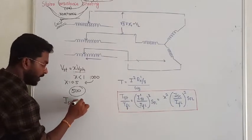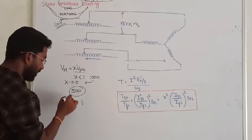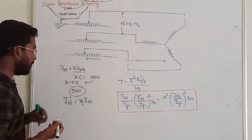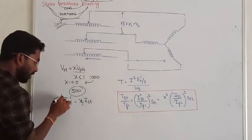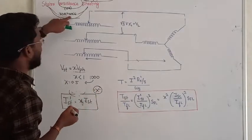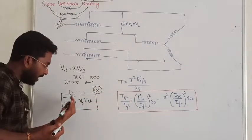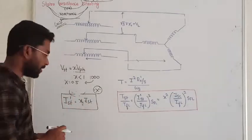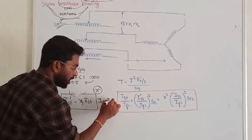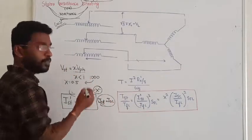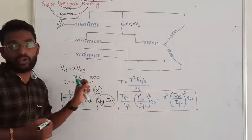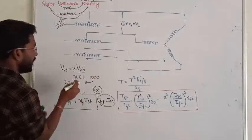Since the starting voltage is reduced by X times, the starting current is also reduced by X times. We represent the reduced starting current as Is-dash, which equals X times the actual starting current. This is very important. The starting current can also be called the short circuit current, because at the time of starting, slip is 1 and the rotor is effectively short-circuited.